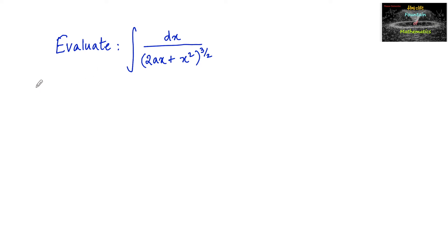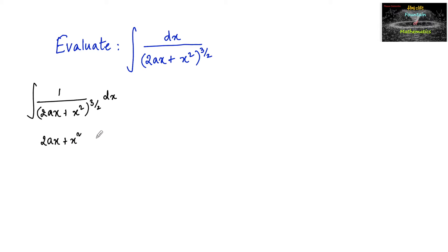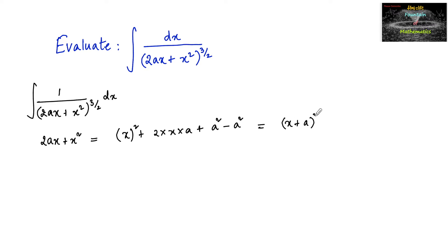Evaluate the integral of 1 upon (2ax + x²)^(3/2) dx. We can write 2ax + x² as x² + 2·x·a, and by adding and subtracting a², it becomes (x + a)² − a². So it is in the form x² − a².